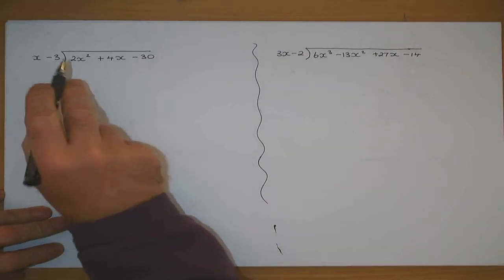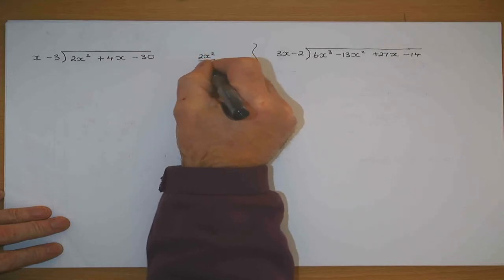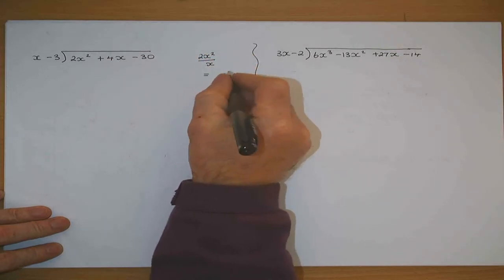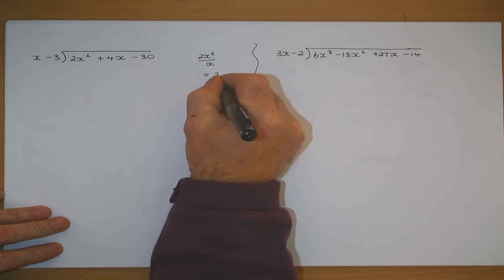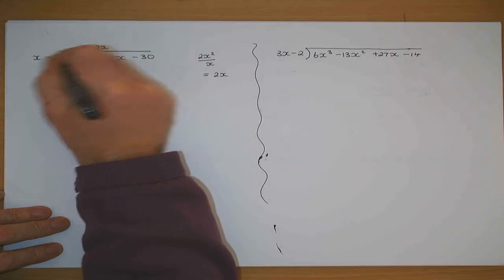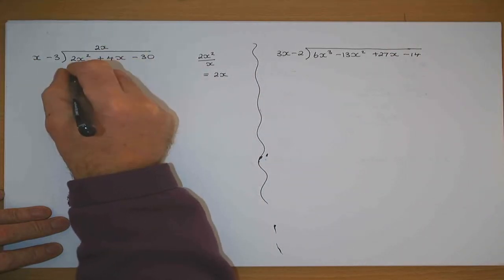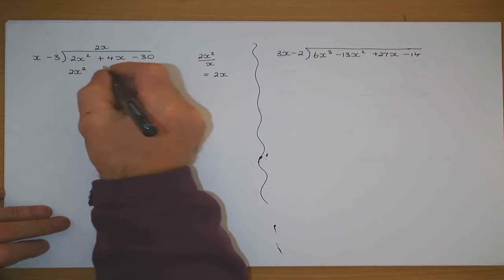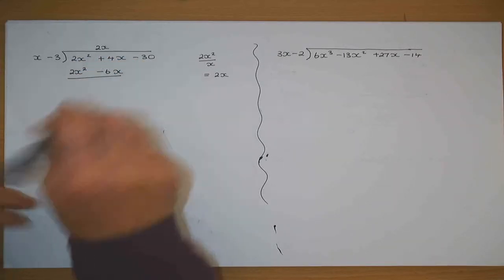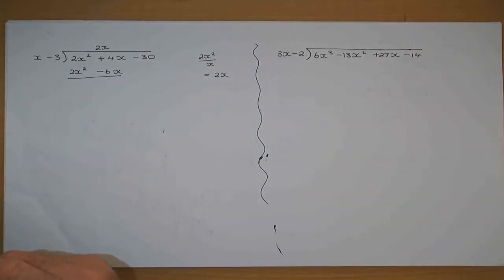We'll do this. x into 2x squared — 2x squared divided by x divides in 2x. So that's 2x. 2x by x gives 2x squared. 2x by minus 3. What do I now do? Change the sign on the lower line and add.